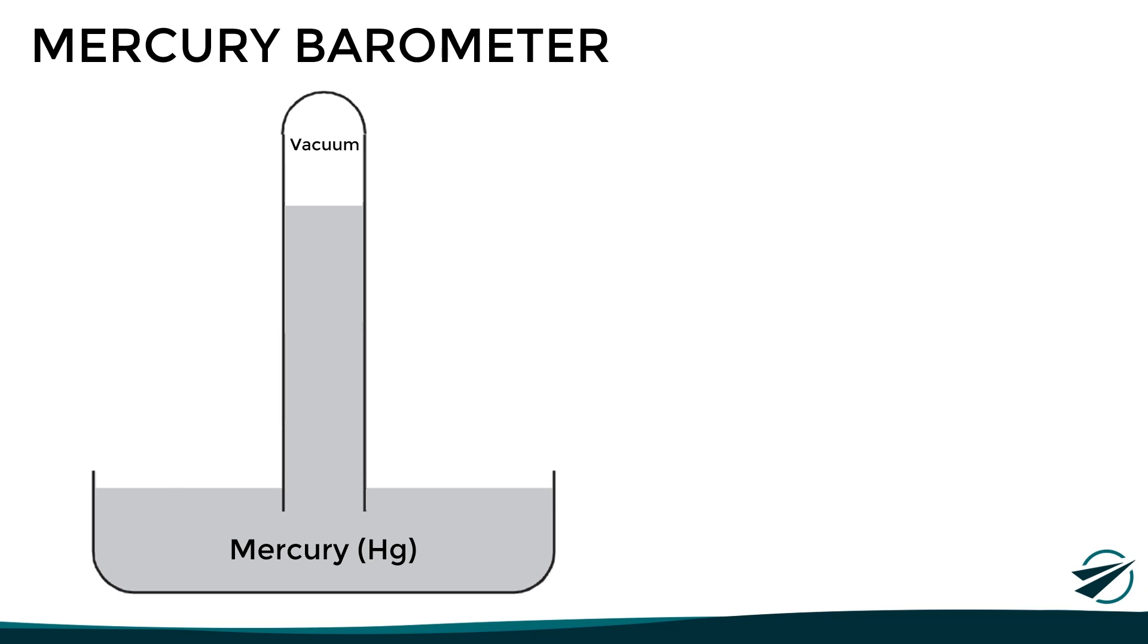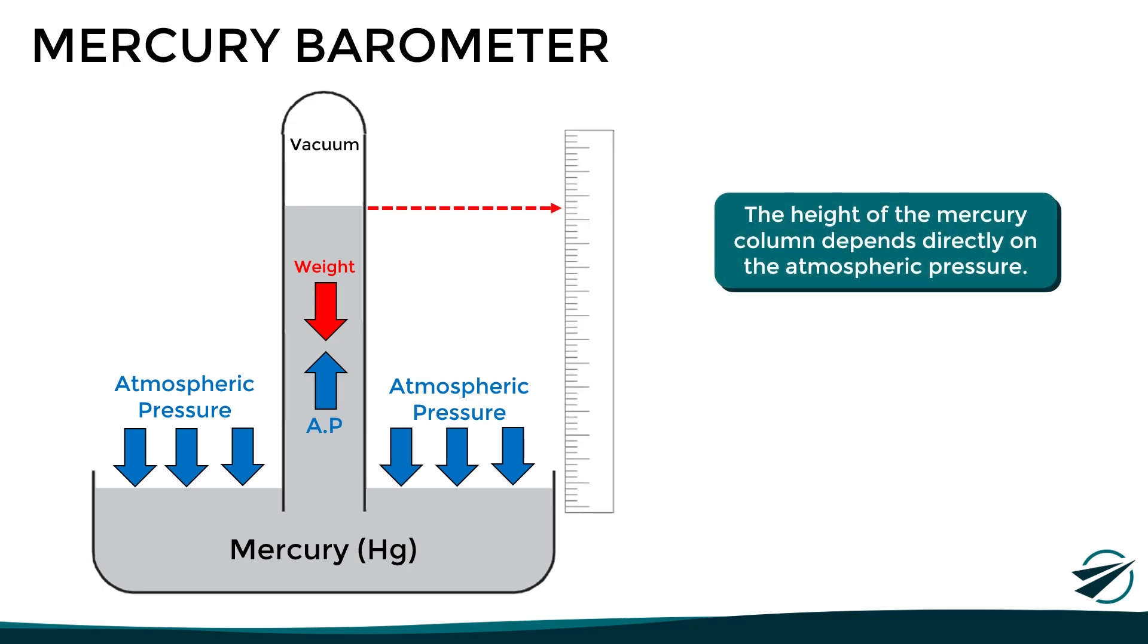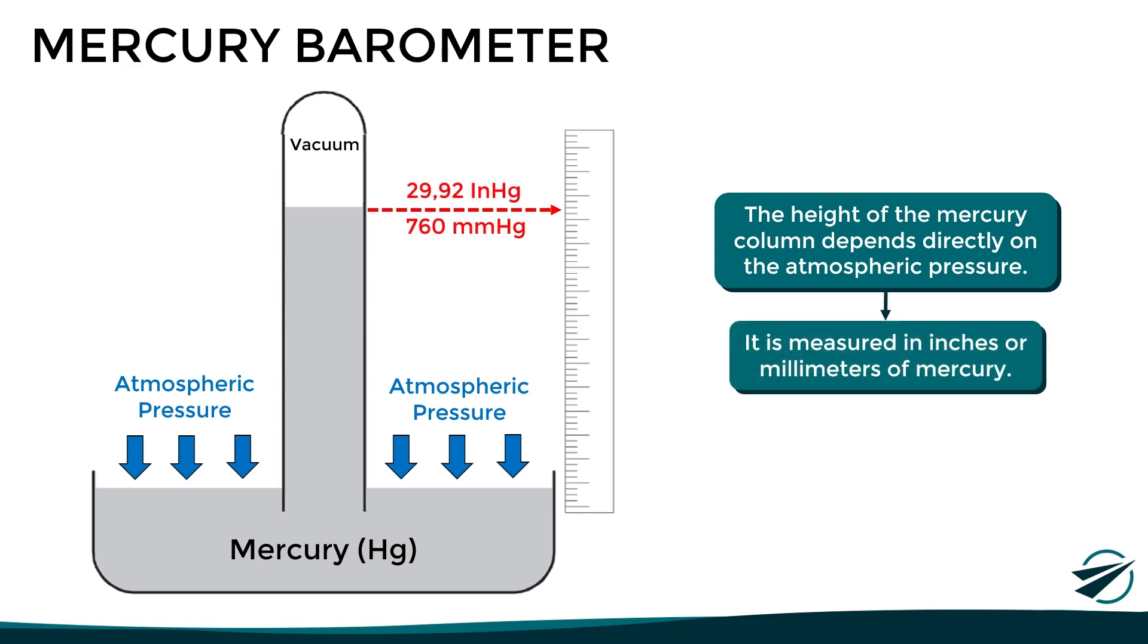A mercury barometer consists of a vacuum glass tube that is closed at the top and open at the bottom. And as we can see, the tube is partially submerged in a bucket or cistern filled with mercury. This way, atmospheric pressure will push the mercury in the cistern, forcing it up the tube. But at the same time, the weight of the mercury itself will try to counteract this. With this, the height of the mercury column depends directly on the atmospheric pressure. For example, if atmospheric pressure reduces, then the height of the mercury column in the tube will decrease. While on the other hand, if the pressure increases, the height of the mercury column will increase. Taking all this into account, atmospheric pressure can be determined directly by measuring the height of the mercury column in the tube, either in millimeters or in inches. And actually, this is how the units of measurement of inches of mercury and millimeters of mercury were born.